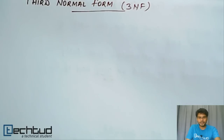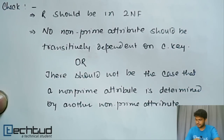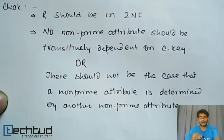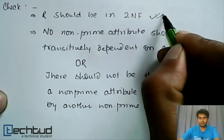The third normal form is a slight upgrade of the criteria. Let's write down the condition which we have to apply on a particular relation to check whether it is in third normal form or not. The first condition is that it should be in second normal form. As we have already discussed, whenever we go to a higher normal form, the relation should satisfy all the lower normal form conditions.